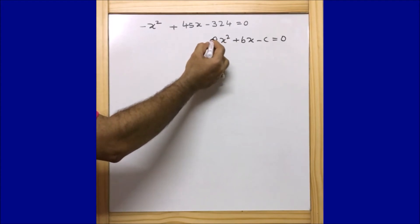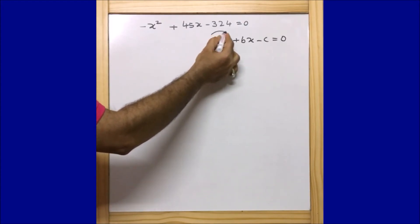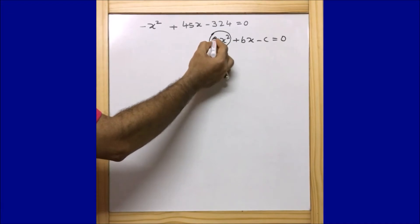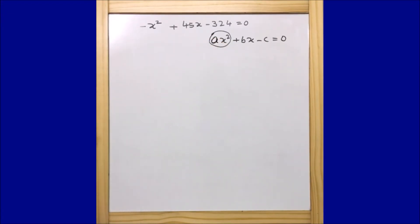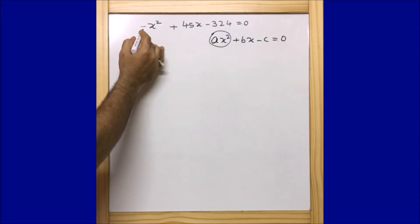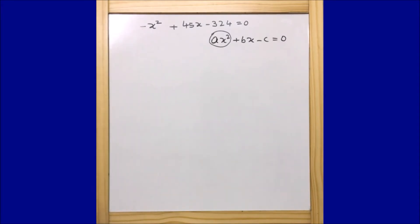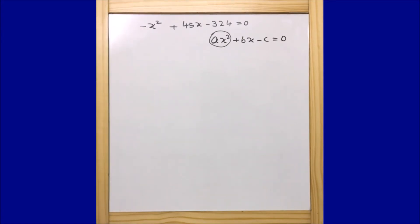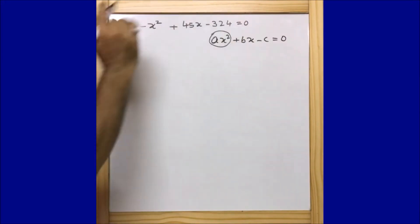The degree of the first term is 2, and the coefficient 'a' should always be positive. It would be easy to proceed if the first part is positive. Here they have given minus x squared, so we need to eliminate this negative sign. To do that, I am going to multiply minus 1 on both sides of the equation.